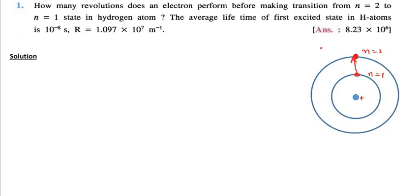Electron cannot stay in excited state for more than 10 raise to minus 8 seconds we know that. So this electron after losing energy again is going to fall back to shell number 1. The electron will stay in second orbit for 10 raise to minus 8 seconds and in that time the electron cannot be stationary, it will keep on moving in circular path.